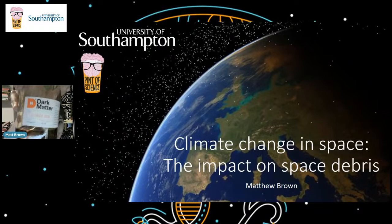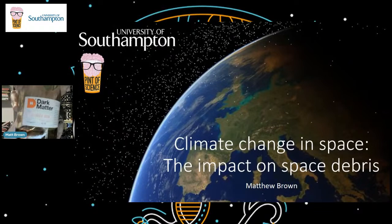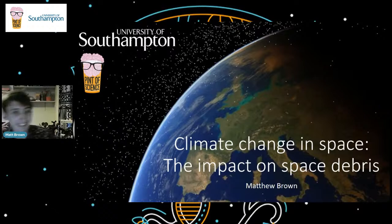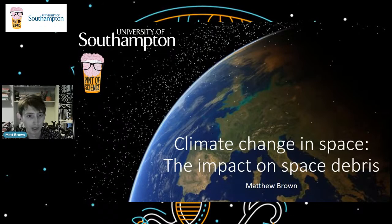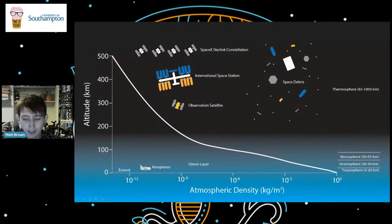Thank you, John. What I'm drinking is dark matter spice rum — only the last bits of it, but it's very nice. So, climate change in space and the impact on space debris — this is going to be a talk in two parts: first, climate change in space, and then we'll be talking about space debris, all the bits spiraling around the Earth.